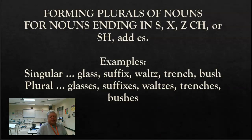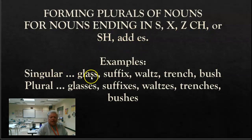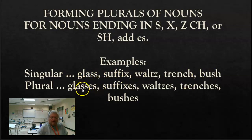Forming plurals of nouns: nouns that end in S, X, Z, CH, or SH — you add ES, not an S. Here are your examples. Singular: glass, suffix, waltz, trench, bush. Notice it's ES: glasses, suffixes, waltzes, trenches, and bushes. And I know some of you think that this is really easy.